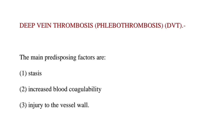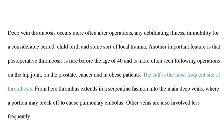The main predisposing factors are stasis, increased blood coagulability, and injury to the vessel wall. Deep vein thrombosis occurs more often after operations, any debilitating illness, immobility for a considerable period, childbirth, and some sorts of local trauma. Post-operative thrombosis is rare before the age of 40 and is more often seen following operations on the hip joint, on the prostate, cancer, and in obese patients.